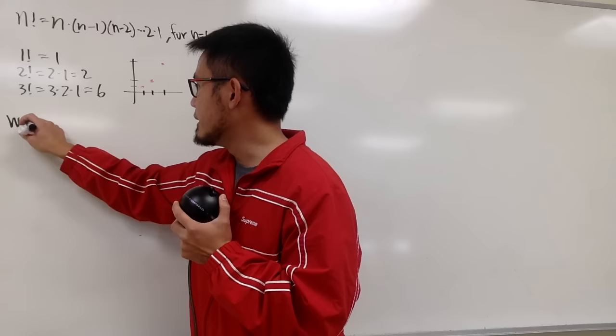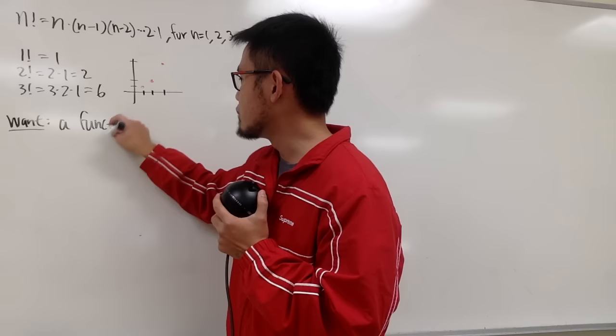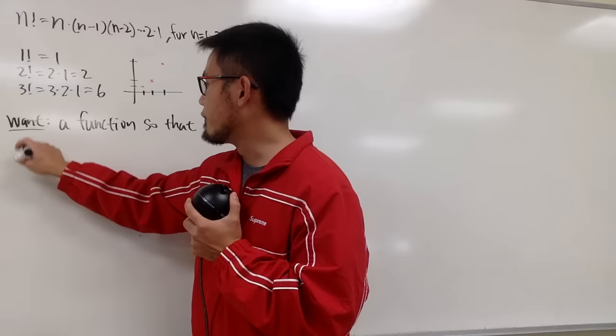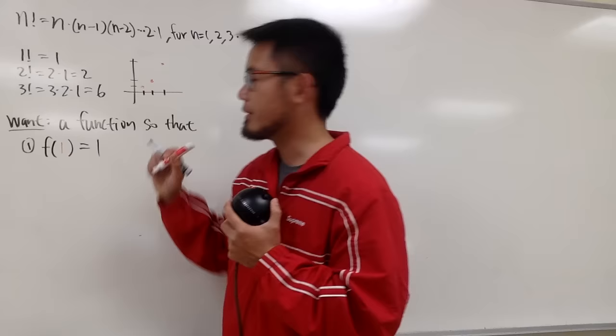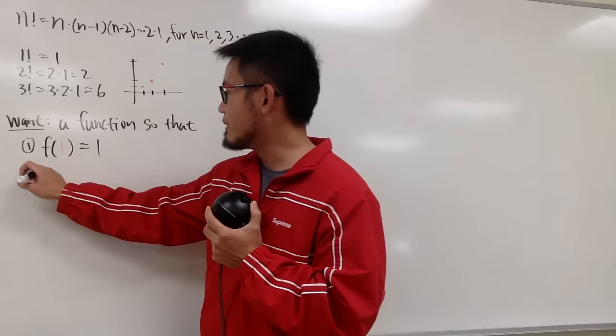So in order to extend the concept of factorial, we want to have a function. The first property is: when we plug in 1, the output is also equal to 1 — so f(1) = 1. This is the most basic one.